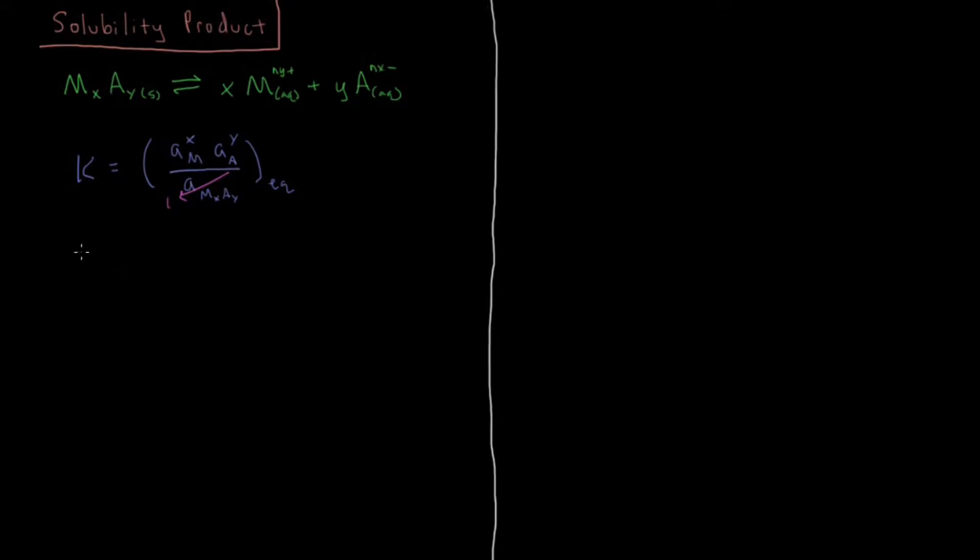And so what we're going to get is a special kind of equilibrium constant which we're going to call a solubility product or Ksp which is going to be equal to in this case if our reaction is defined by such types of values here, will be the activity of the metal to its stoichiometric coefficient times the activity of the anion to the power of its coefficient. Again activity being basically concentration since these concentrations are going to be fairly small. And as I said this Ksp is called the solubility product and is a special kind of equilibrium constant.